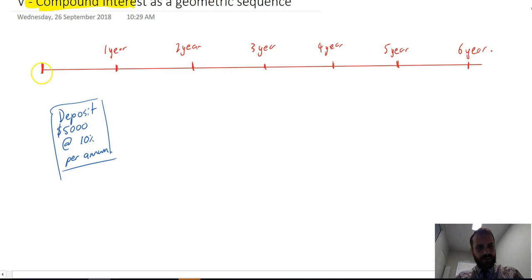All right, so here's my timeline and I'm going to deposit $5000 at 10% per annum. You should remember a little bit about compound interest, but let's put some money in the bank. We put $5000 in there and then after one year we'll have $5000...